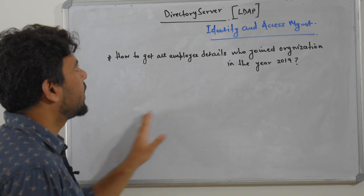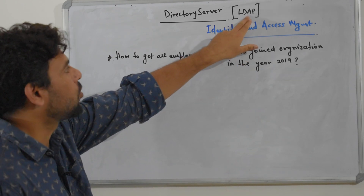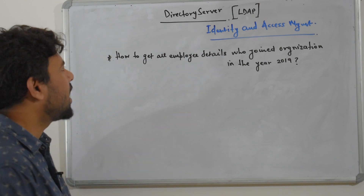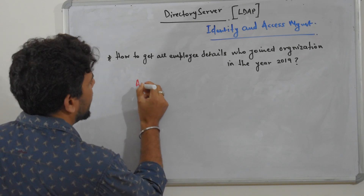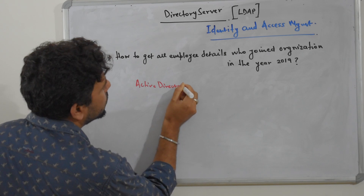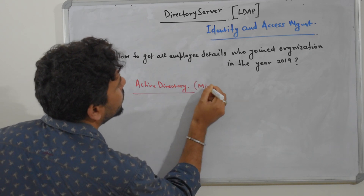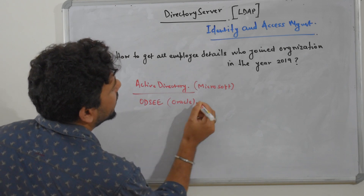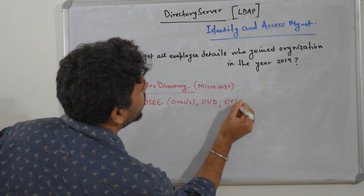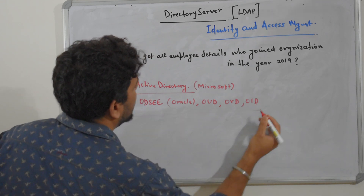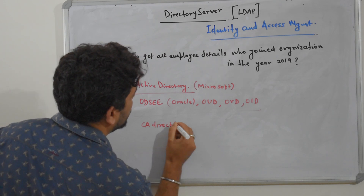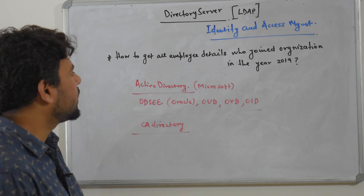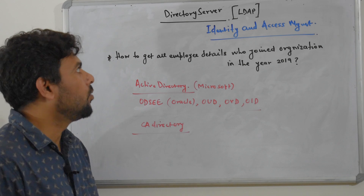The protocol used to communicate with a directory server is called LDAP, very similar to HTTP. Your organization could be using various directory servers: Active Directory from Microsoft, ODSEE (Oracle Directory Server Enterprise Edition), Oracle Unified Directory, Oracle Virtual Directory, Oracle Internet Directory, or CA Directory (now also called Broadcom CA). There are different vendors in the market for directory servers.